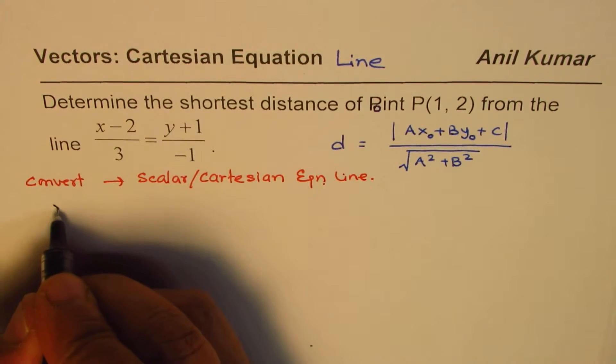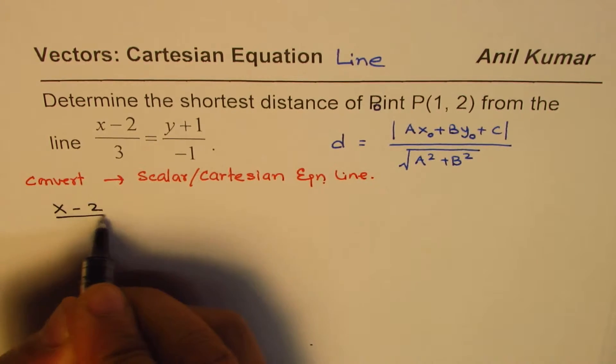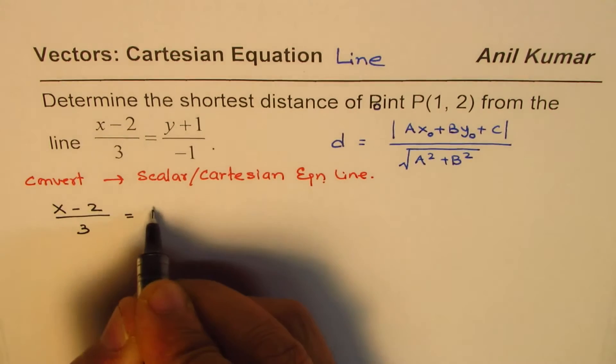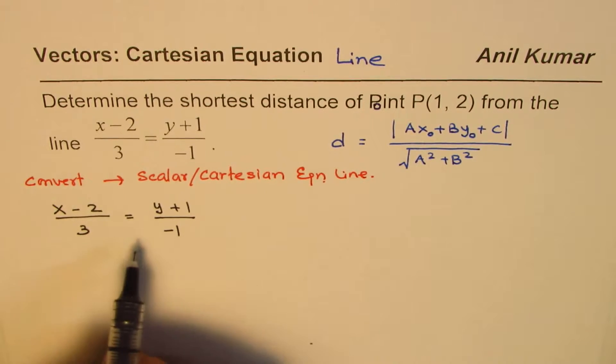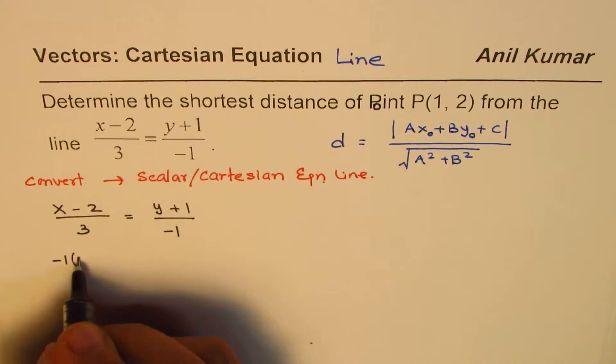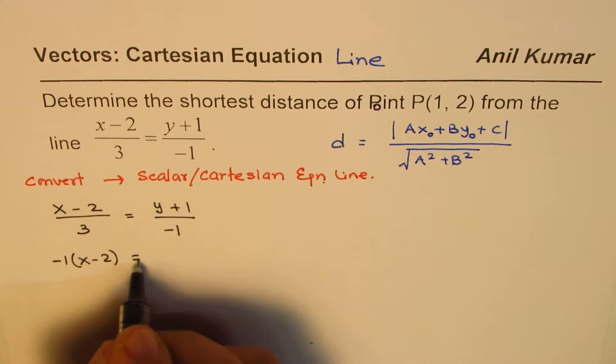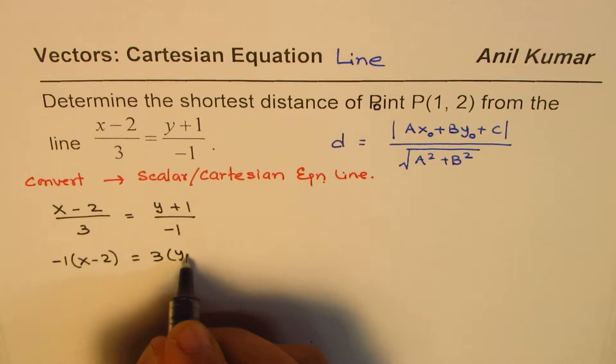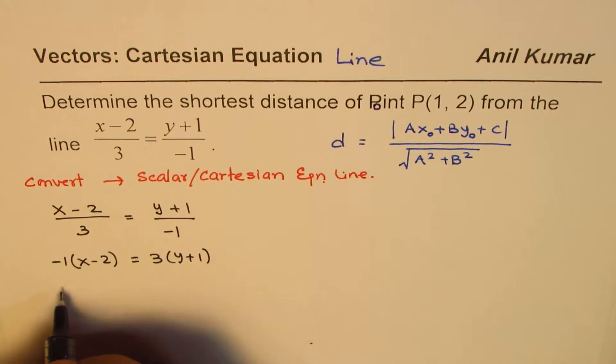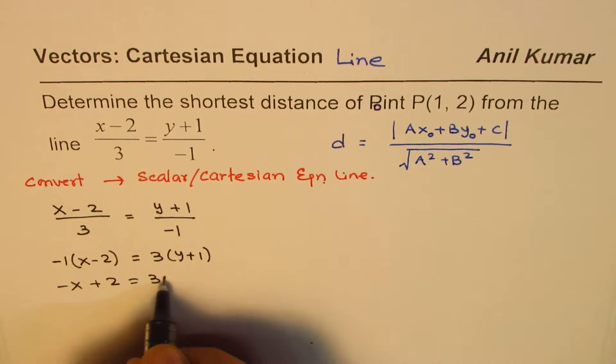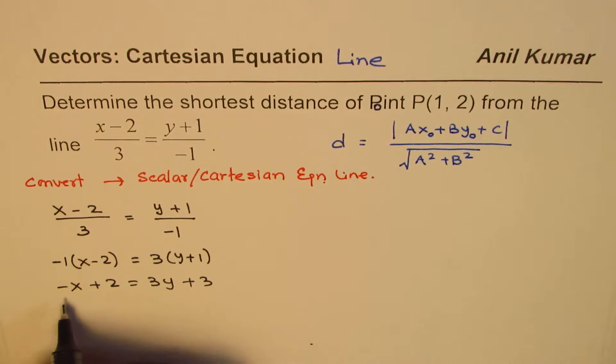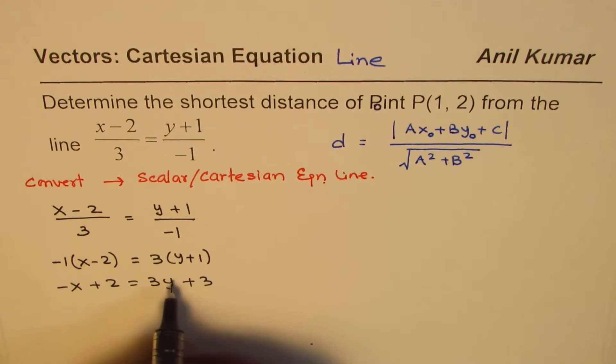We are given (x - 2)/3 = (y + 1)/(-1). The best way is just cross-multiply. So we will do -1(x - 2) = 3(y + 1). Open the bracket. We have -x + 2 = 3y + 3. Bring the terms together. Keep the coefficient of x positive, so I will take it to the right side.